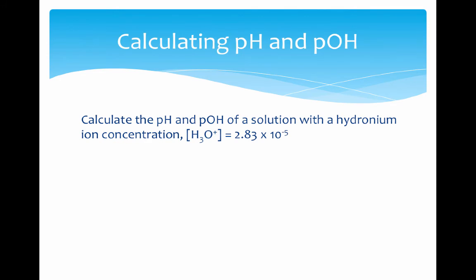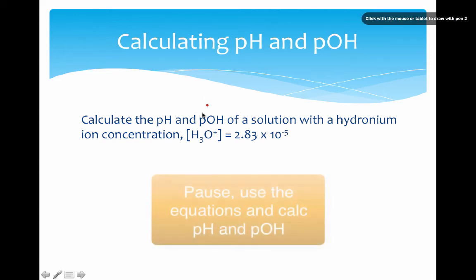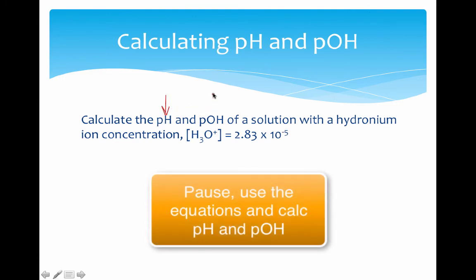Let's wrap this up by trying some mathematics. If you're comfortable with logarithms, pause the video and give this problem a try. You're asked to calculate the pH and pOH of this solution based on this hydronium ion concentration. Use those four equations we outlined to figure this out. If you don't know what you're doing, move to the next part where I'll explain and walk through the answers.